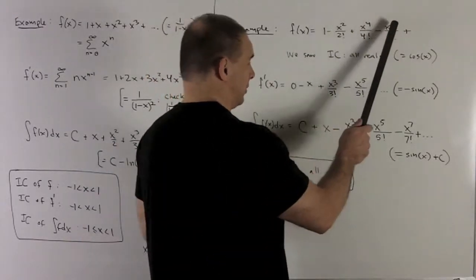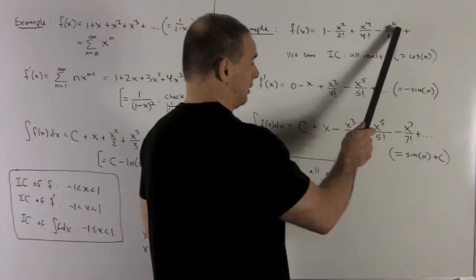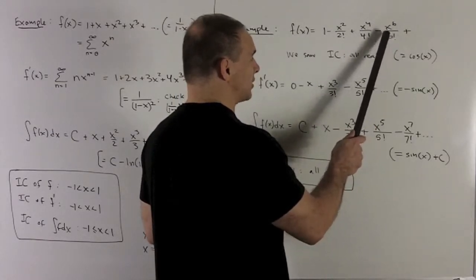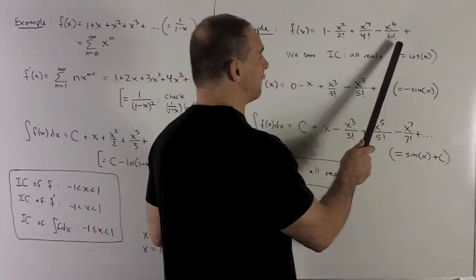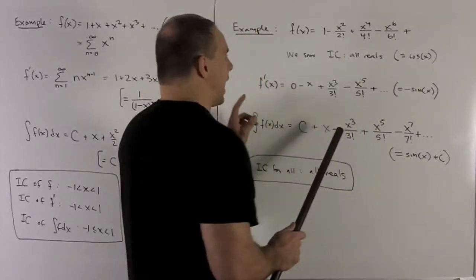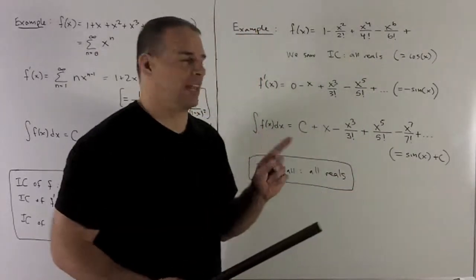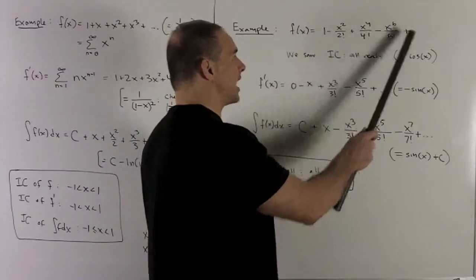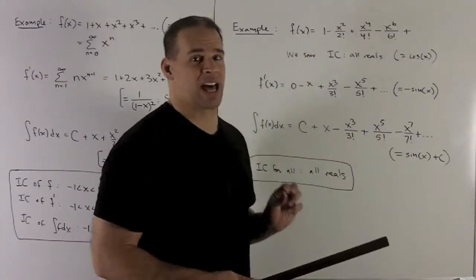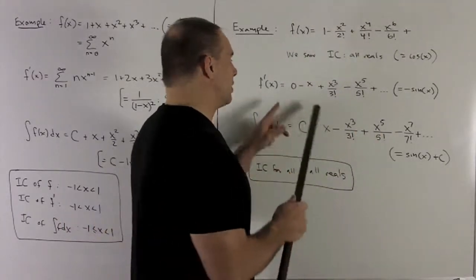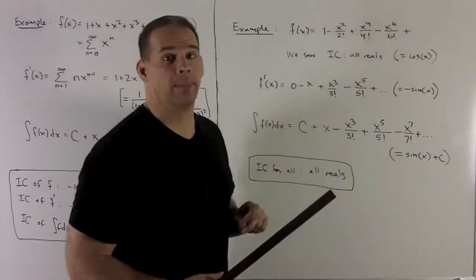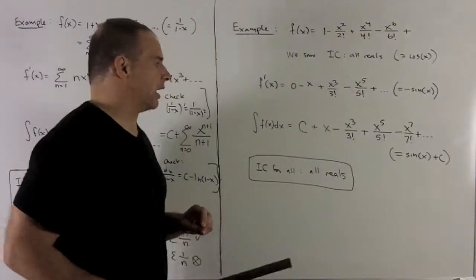Then the 6 on the top comes down, canceling the 6, making it a 5 factorial. So we get this result. If I claim that this is going to represent cosine somehow, the derivative of cosine is going to be minus sine. So this power series is claiming to represent minus sine somehow — we'll see that later.